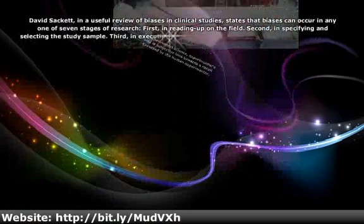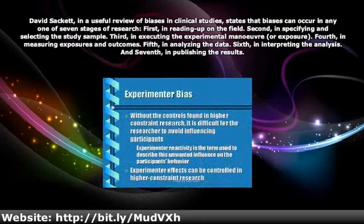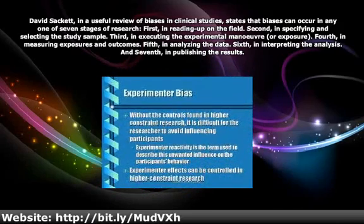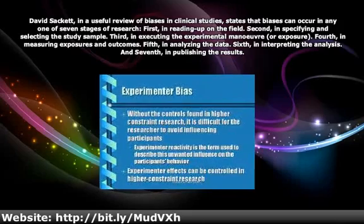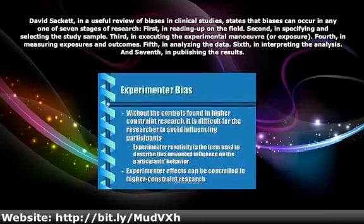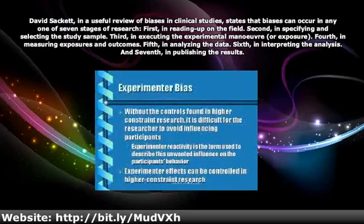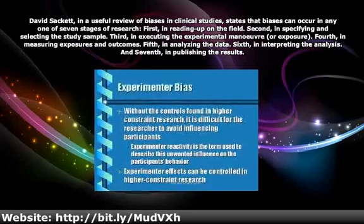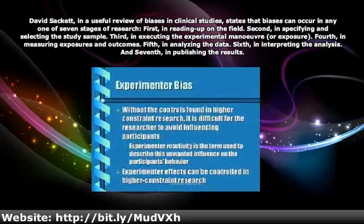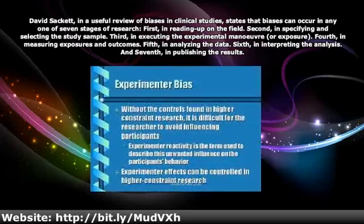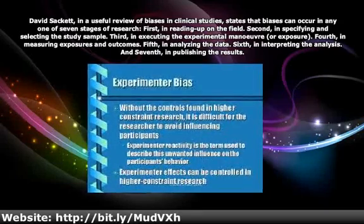David Sackett, in a useful review of biases in clinical studies, states that biases can occur in any one of seven stages of research: 1st, in reading up on the field; 2nd, in specifying and selecting the study sample; 3rd, in executing the experimental maneuver or exposure; 4th, in measuring exposures and outcomes; 5th, in analyzing the data; 6th, in interpreting the analysis; and 7th, in publishing the results.